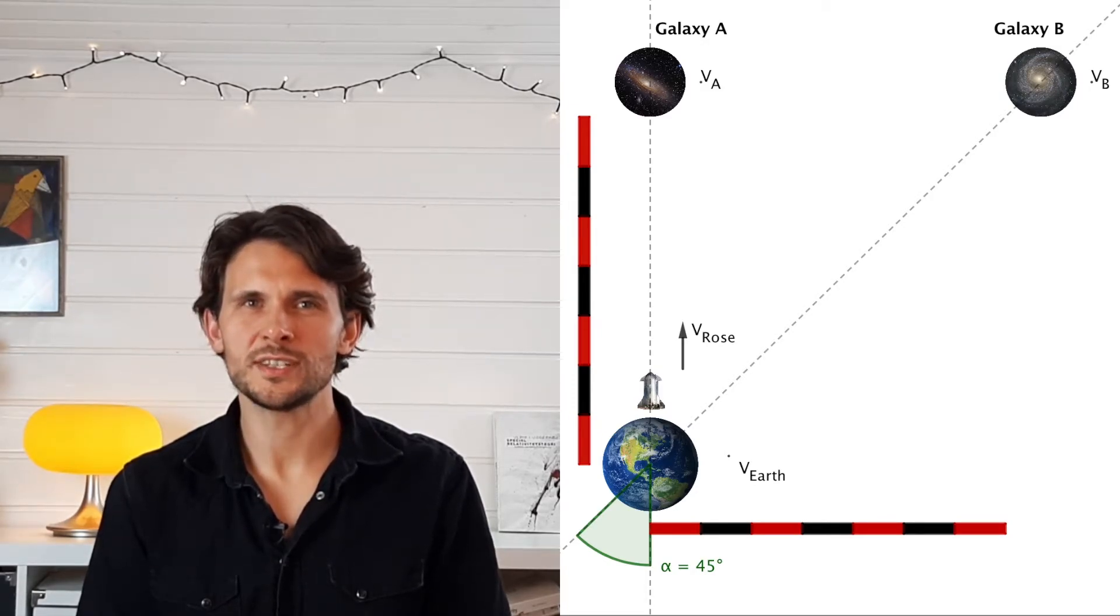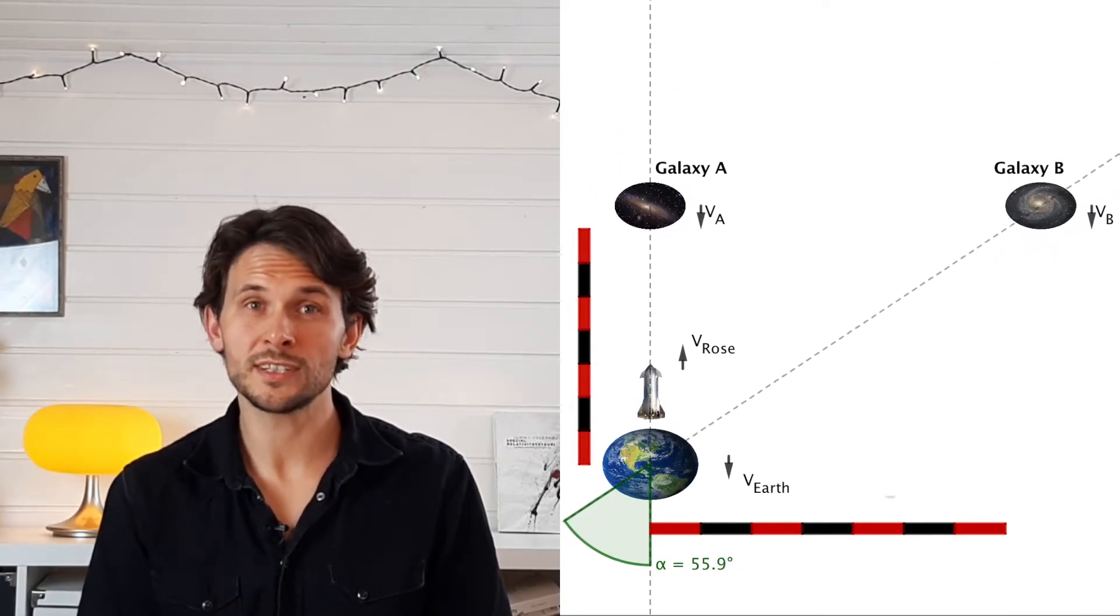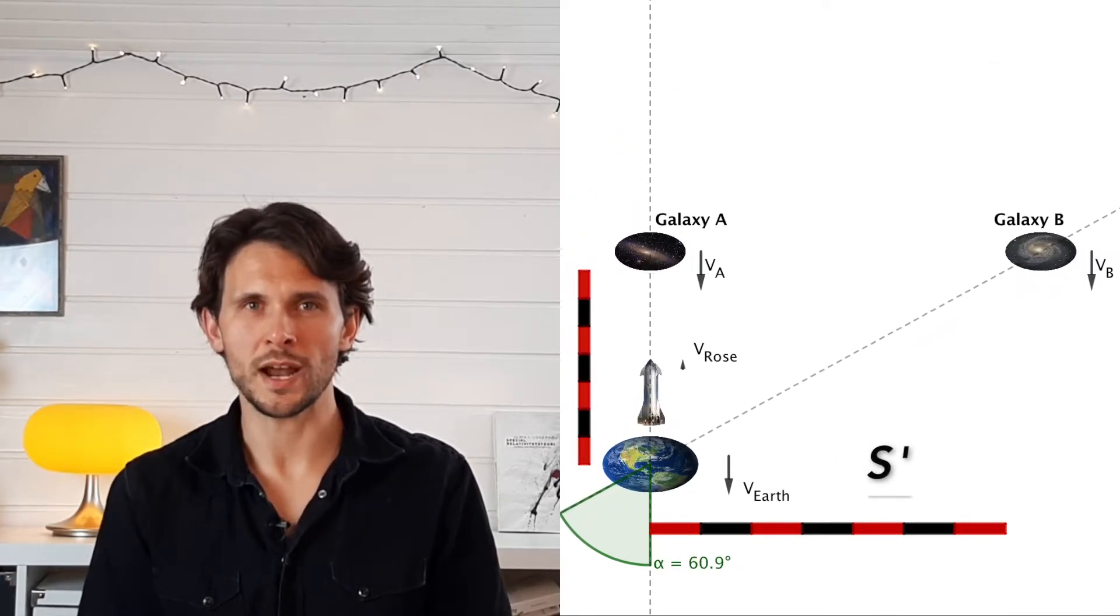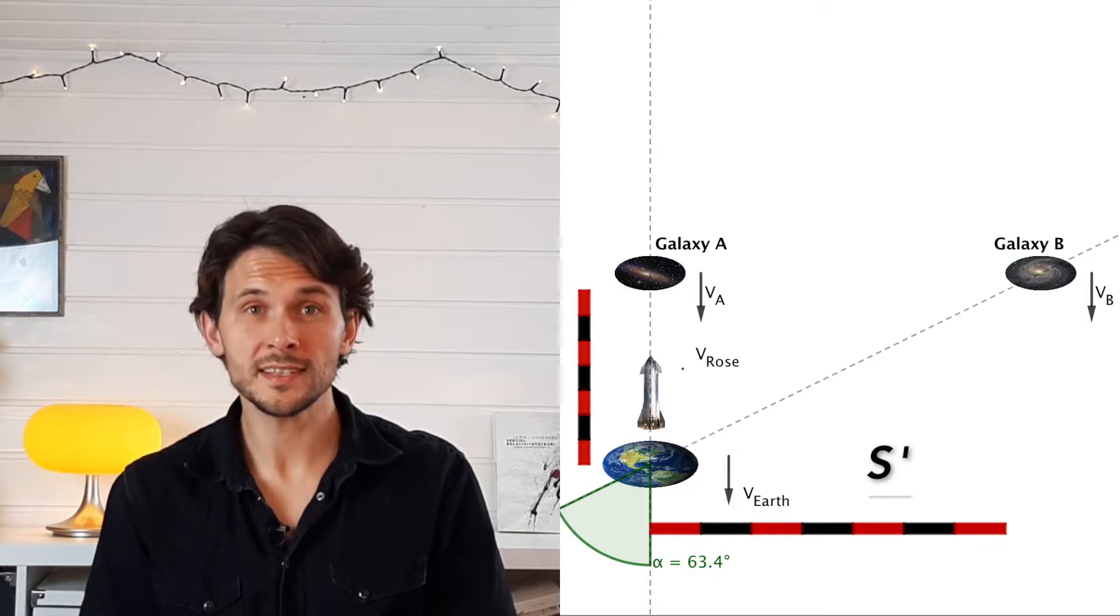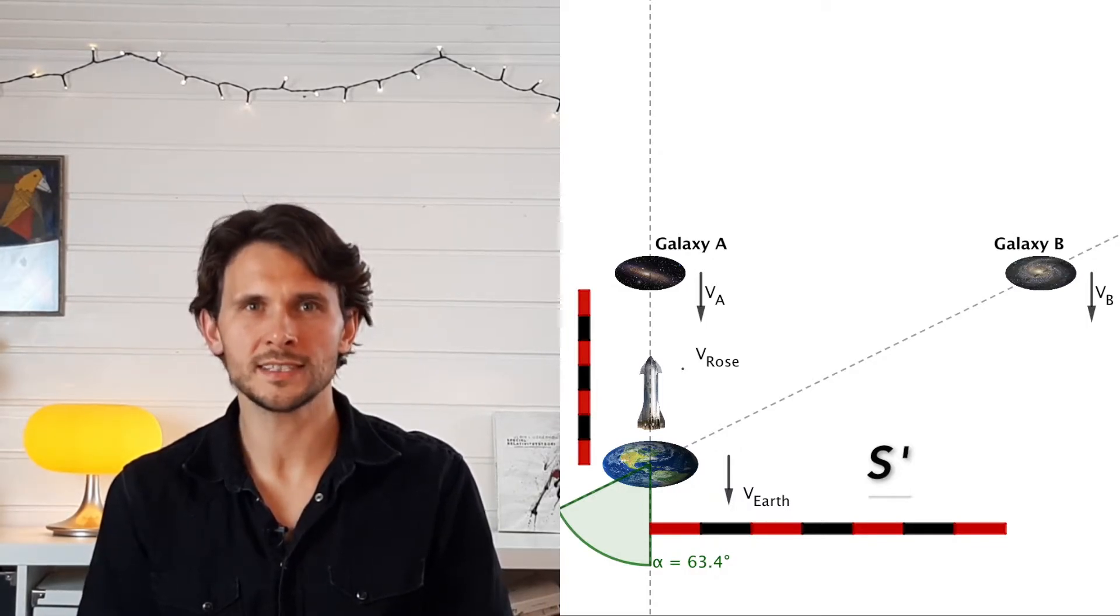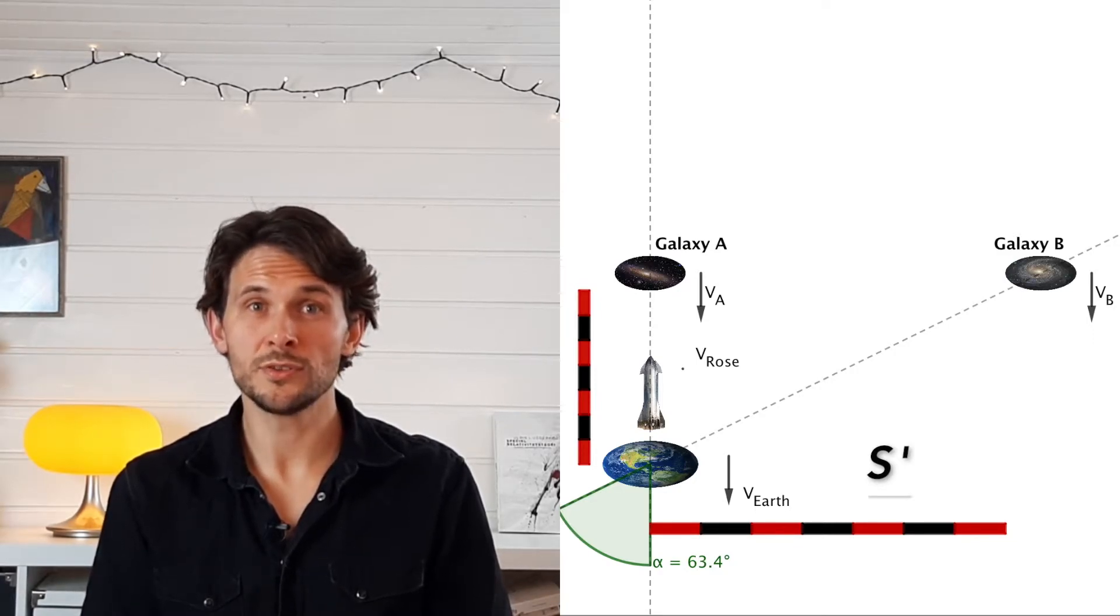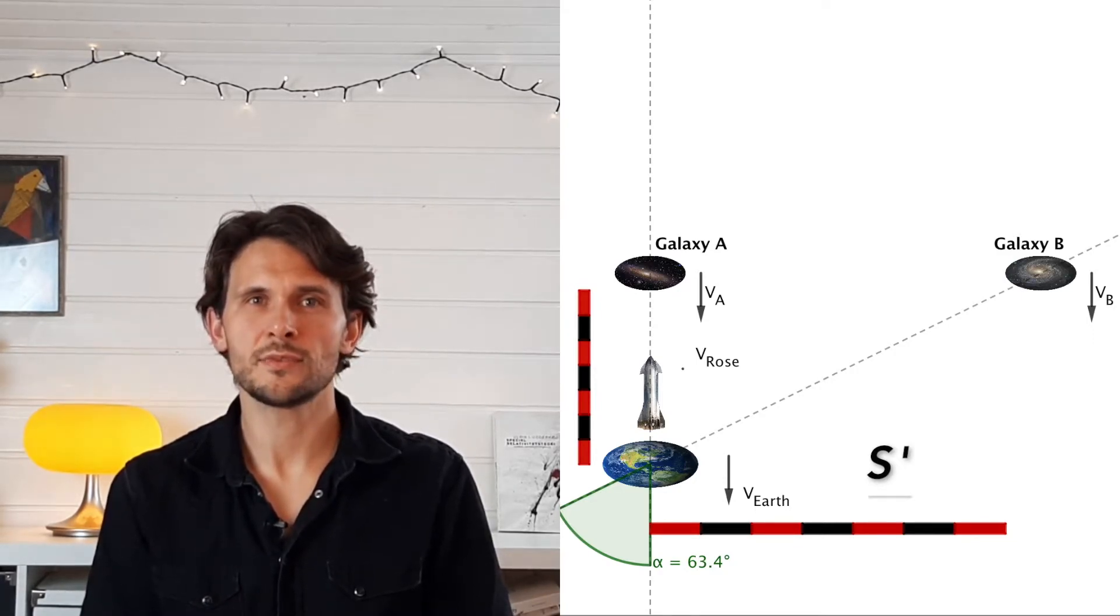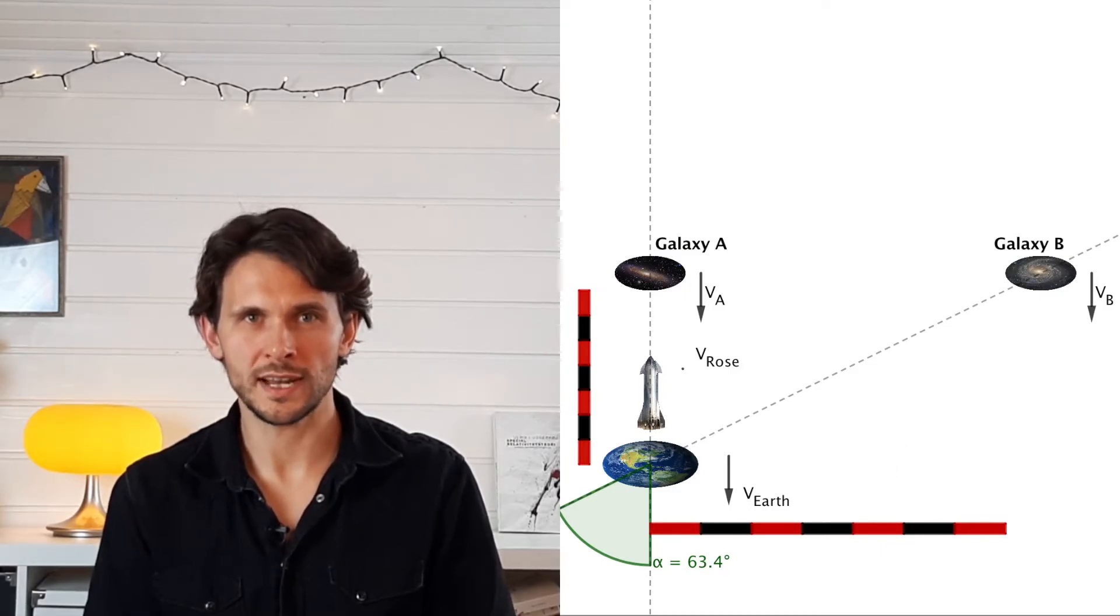Let's see what the situation looks like from the perspective of the starship. I will denote this frame of reference as prime. Here the star map is contracted along the axis of motion with a factor of one half and this changes the position of galaxy B. From the perspective of Rose, she has to turn the nose of the ship 63.4 degrees and not 45 degrees to get to galaxy B.